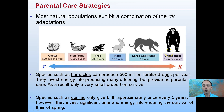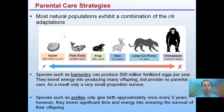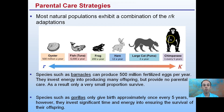Species such as gorillas only give birth approximately once every five years. However, they invest a significant amount of time and energy into ensuring the survival of their offspring. Gorillas and chimpanzees choose to have fewer offspring but put more energy into care, while oysters and barnacles put no energy into care and put all their energy into producing as many individuals as possible. You can see frogs and rabbits are more in the middle. Chimpanzees and gorillas are one extreme, and oysters and barnacles the other — yet both are able to succeed in the global environment, though their strategies are very different.